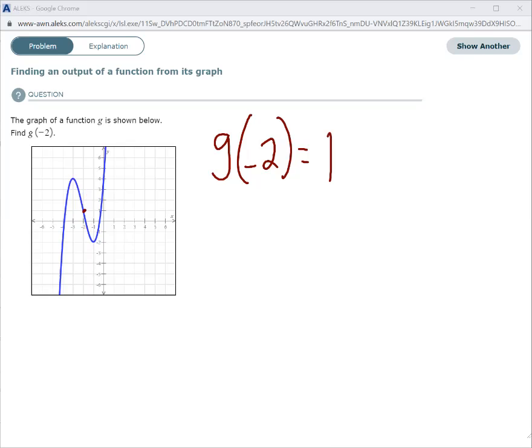So the graph of the function g of negative 2 equals 1.